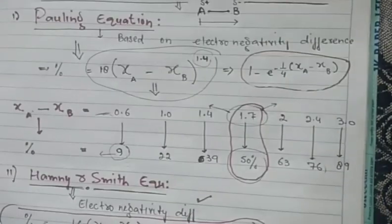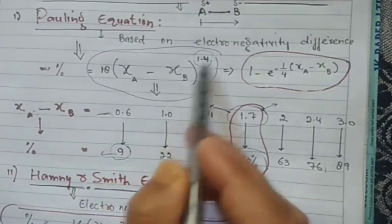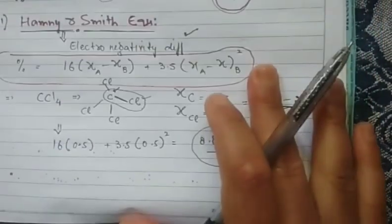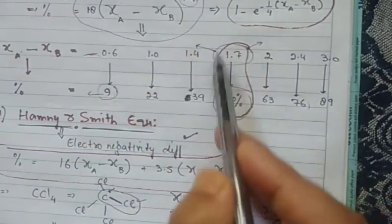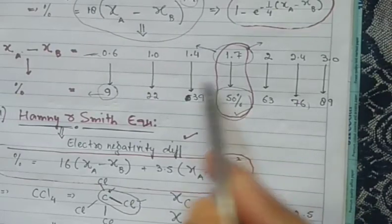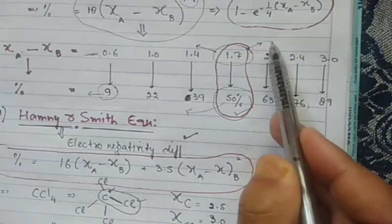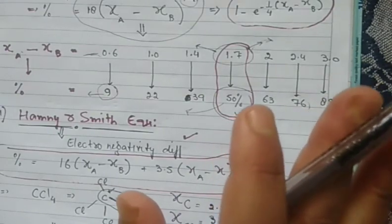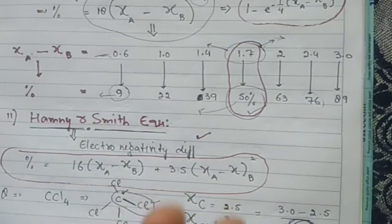Both methods are based on the electronegativity difference of the two atoms. Pauling's equation is 18 × (χ_A − χ_B)^1.4, while Hannay and Smith give 16(χ_A − χ_B) + 3.5(χ_A − χ_B)². Remember: electronegativity difference of 1.7 means 50% ionic; less than 1.7 means less than 50% ionic; greater than 1.7 means more than 50% ionic. This concludes the ionic portion of the chemical bonding chapter. The next class will cover covalent bonds.